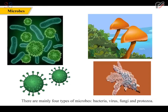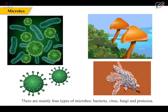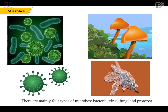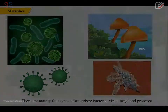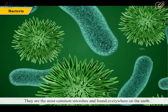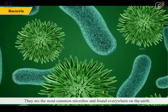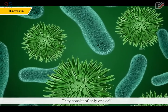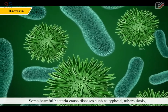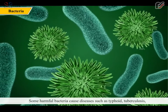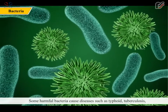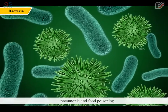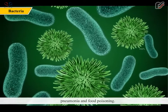There are mainly four types of microbes: bacteria, virus, fungi, and protozoa. Bacteria are the most common microbes and are found everywhere on earth. They consist of only one cell. Some harmful bacteria cause diseases such as typhoid, tuberculosis, pneumonia, and food poisoning.